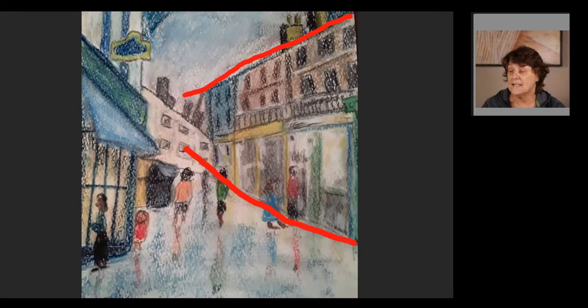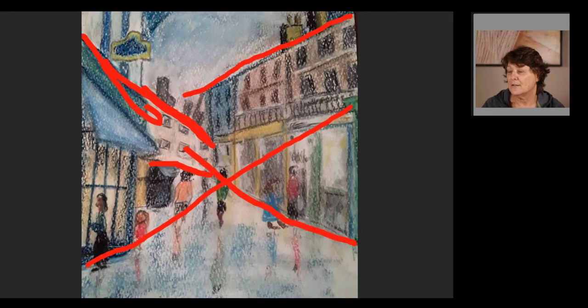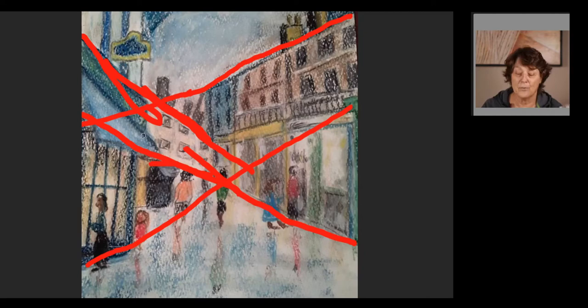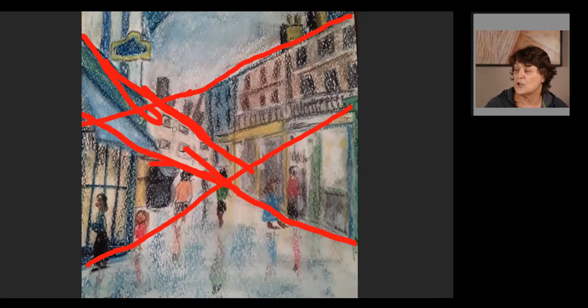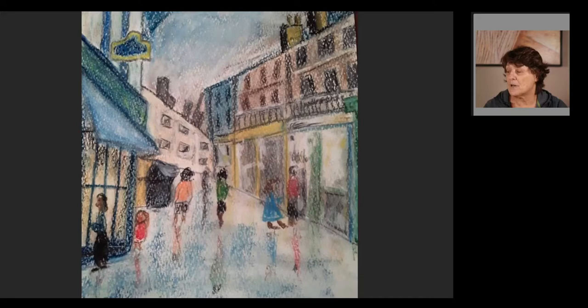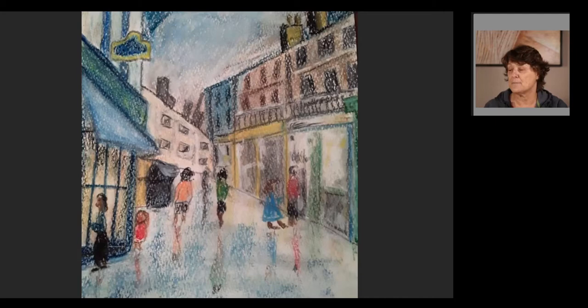But all of the buildings need to converge at the same place. That building at the back doesn't converge at the same place — this building here, if we carry on, would converge over here. With perspective, all the buildings along this side of the road and all the buildings along that side will all converge in the same place, called the vanishing point, which is the same as the horizon. But it actually doesn't really matter in this instance — there's a beautiful character to this piece and it's really lovely, really nice. Well done.